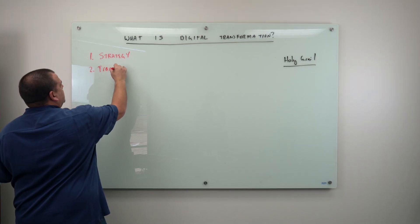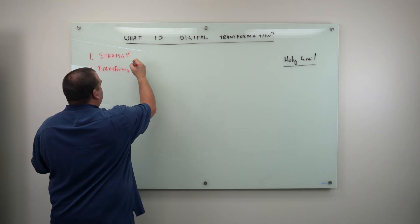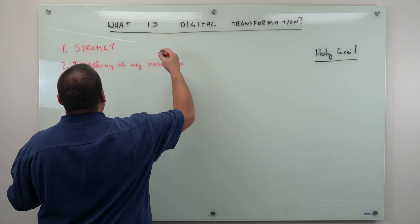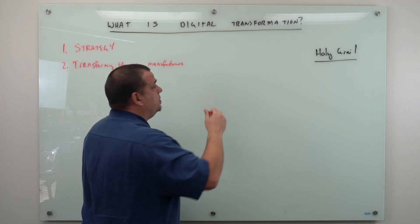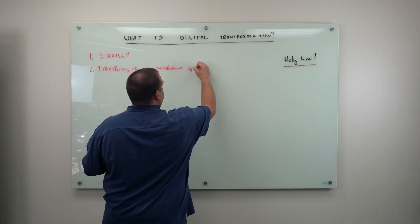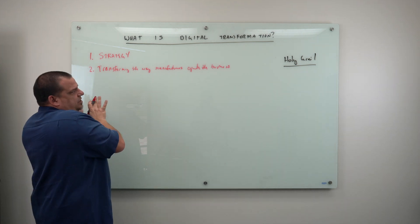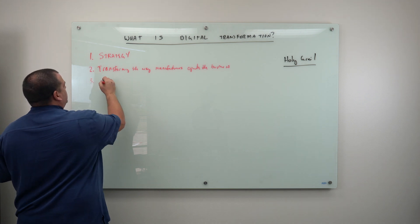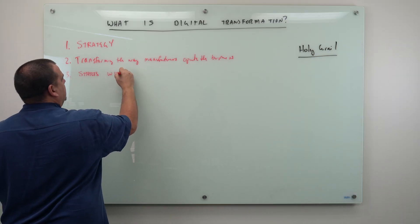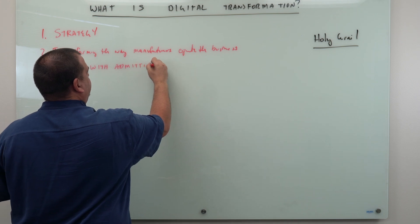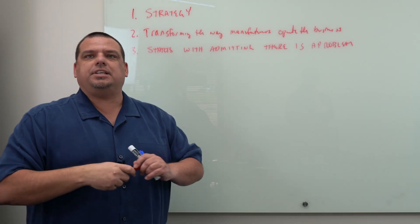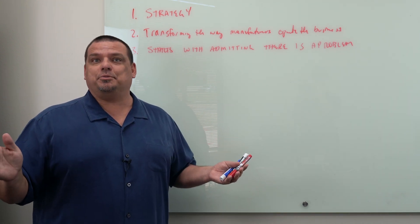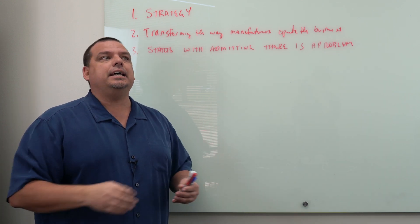Digital transformation is a strategy for transforming the way manufacturers operate their business. And that transformation is in service of the holy grail. Number three, digital transformation starts with admitting there's a problem. The problem is that as an Industry 3.0 organization, you do not make decisions with real-time data and information.